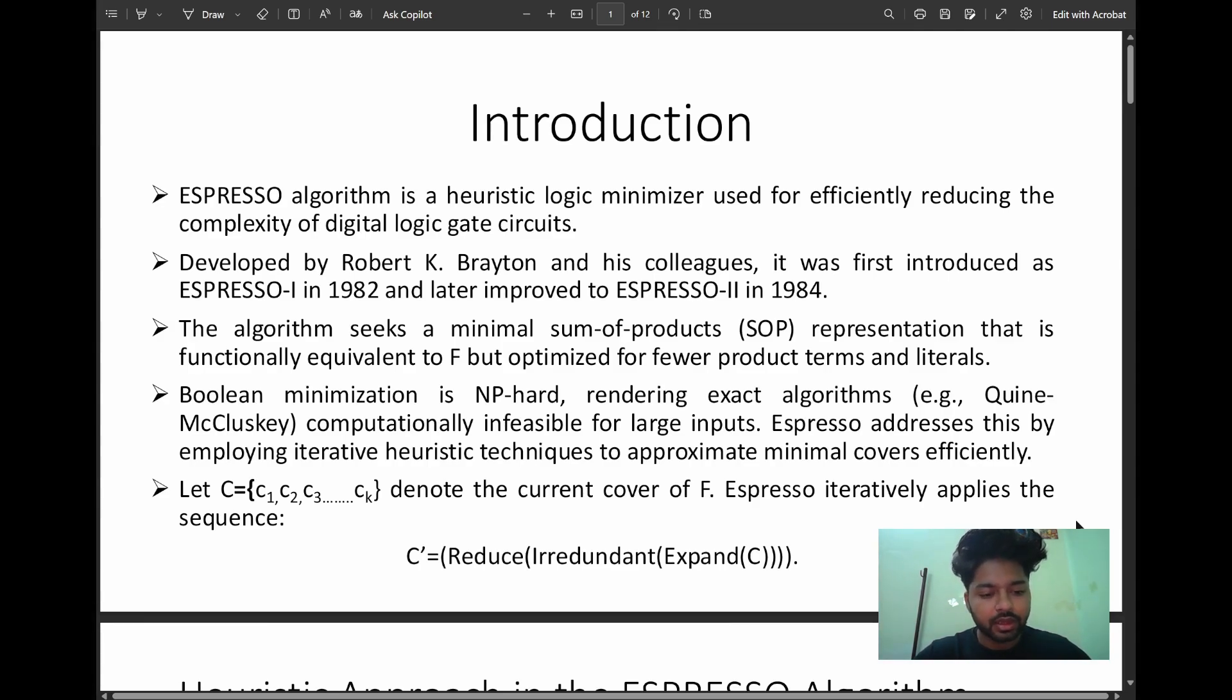Let C have values C1, C2, C3, and Ck. It denotes the current covering F, and Espresso iteratively applies the sequence: first expand, then irredundant, then reduce.